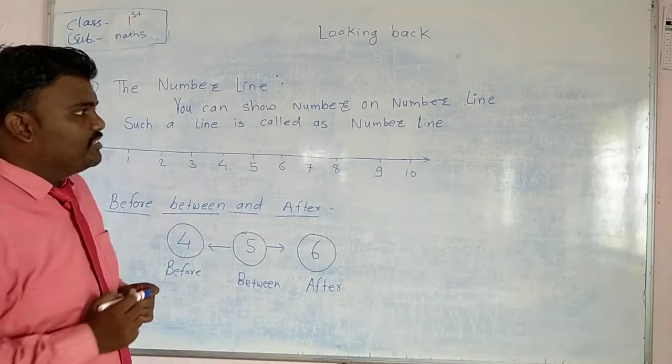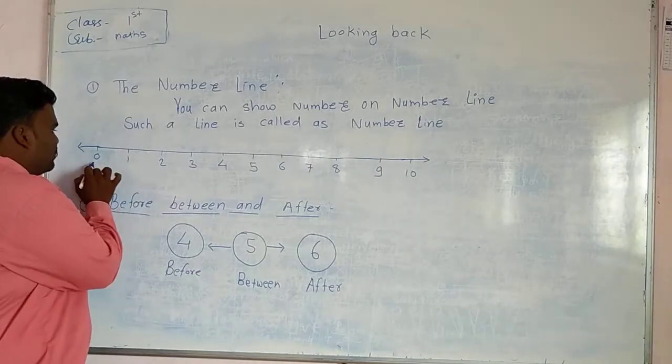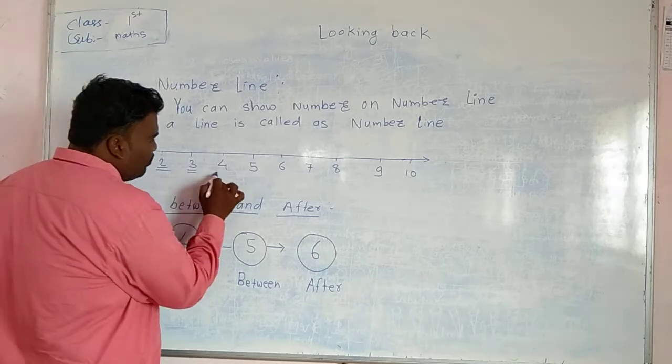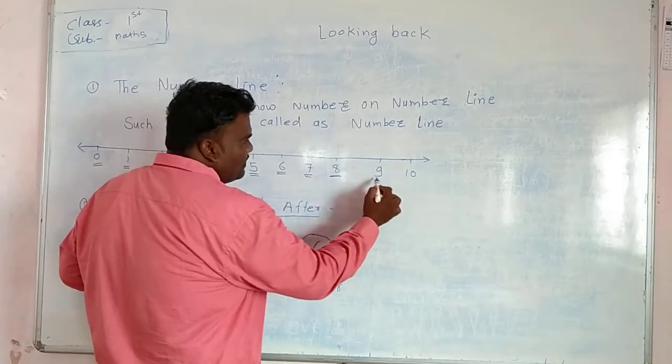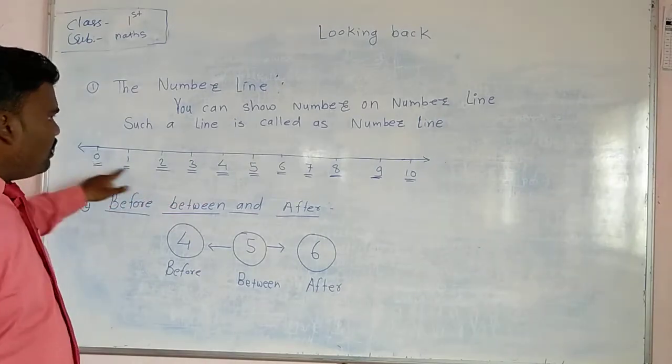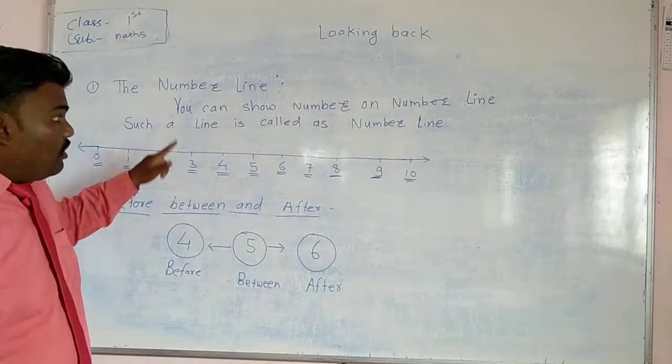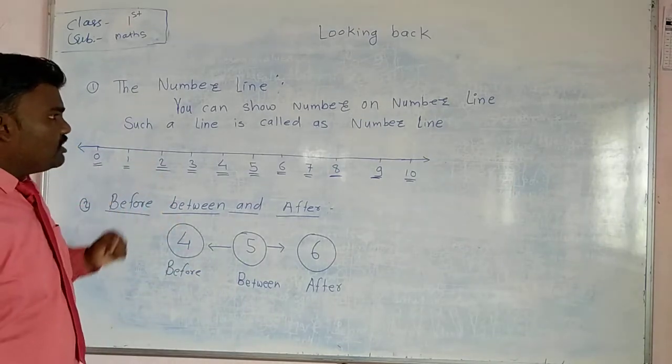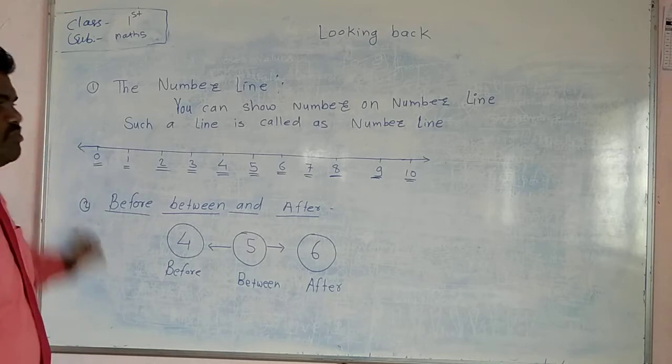Dear students, we have one line and on that line there are some numbers: 0, 1, 2, 3, 4, 5, 6, 7, 8, 9 and 10. You can see that all numbers are lying on the line. It means that all numbers are lying on the line, so just because of that, we are saying that this is the number line.